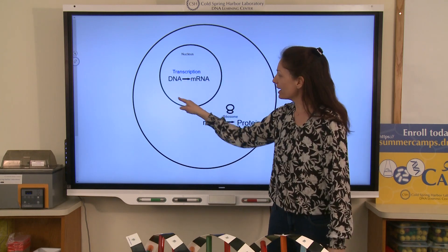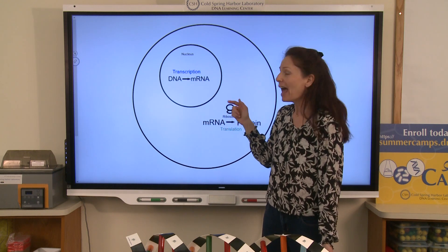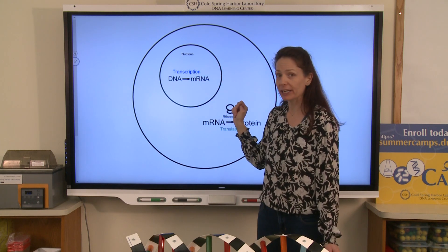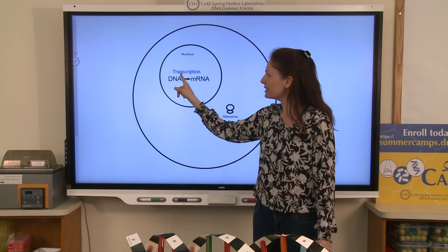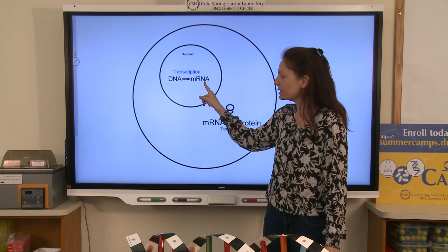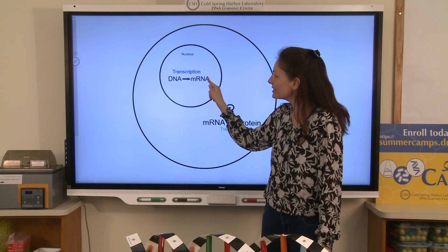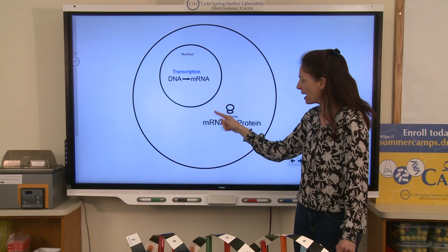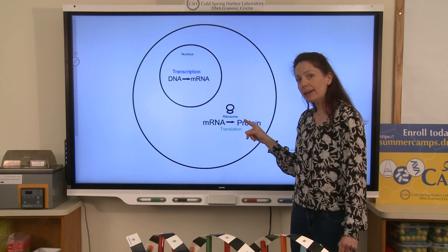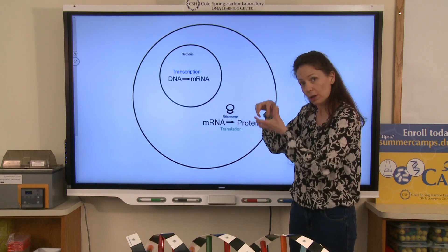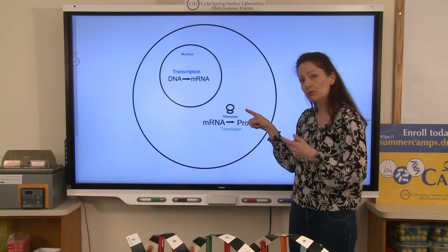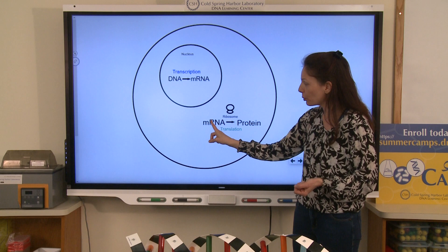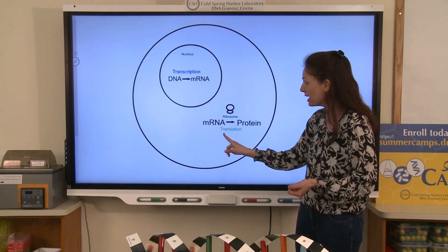Here I have drawn just a nucleus in the cell, and that's where the DNA would be. Transcription happens in eukaryotic cells in the nucleus, and transcription in general is how we take information in DNA and use it to make a molecule which we call mRNA. Once that mRNA molecule is made, it will leave the nucleus and come out into the cytoplasm, where a ribosome structure will form and the information in the mRNA will be read to build a protein.